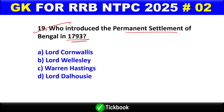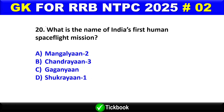Question number 19: Who introduced the Permanent Settlement of Bengal in 1793? Option A is the right answer — Lord Cornwallis.